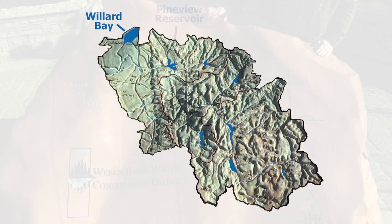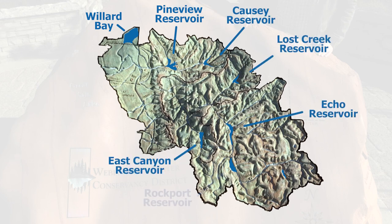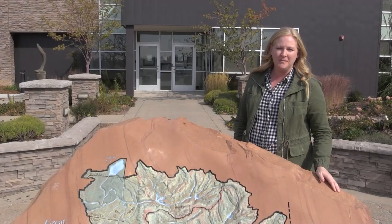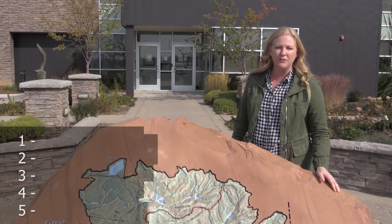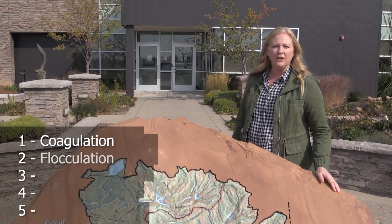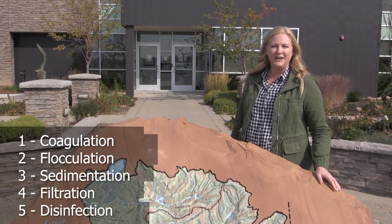We have Willard Bay, Pine View Reservoir, Causey Reservoir, Lost Creek, East Canyon, Echo, Rockport, and Smith and Morehouse. Here at the water treatment plant, we have a five-step process that we use to clean the water: coagulation, flocculation, sedimentation, filtration, and disinfection. We're going to head over to our chemical building where we will start teaching you about that treatment process.